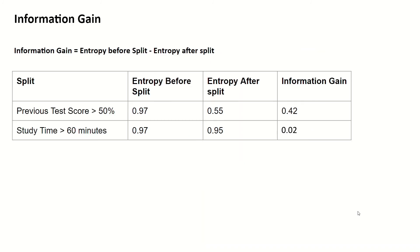Now that we have the entropy before and after the split for both decision trees, we can look at information gain. For previous test score larger than 50%, entropy before minus entropy after gives an information gain of 0.42. For the split on study time larger than 60 minutes, we have an information gain of 0.02. So the better split is the one with the larger information gain, which in this case is: does the student have a previous test score larger than 50%?